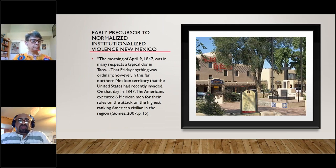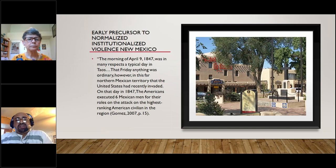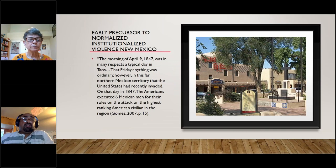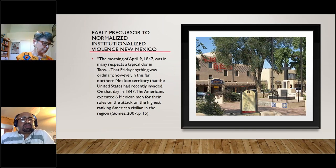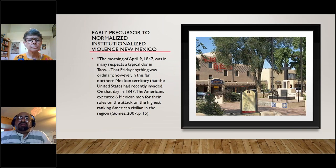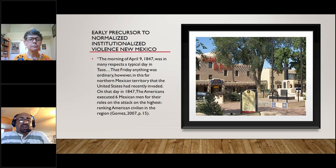An early precursor to violence: one of the first examples happened in New Mexico, in Taos. The morning of April 9, 1847, in that far northern American territory the United States had recently invaded, the Americans executed six Mexican men for their roles in an attack on the highest-ranking American civilian in the region. People were hung and made an example of. This consistent pattern was used to put fear into people through violence — to subdue and control them. Violence was used where people were hung in public by the US military.